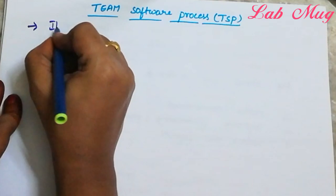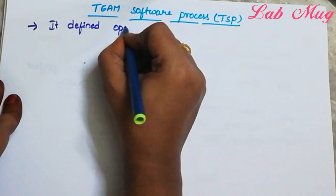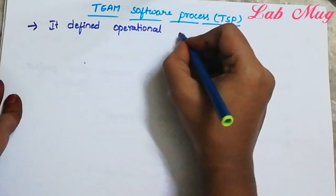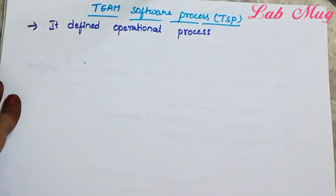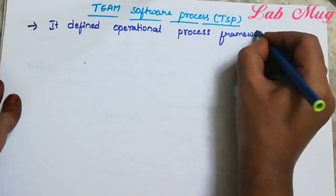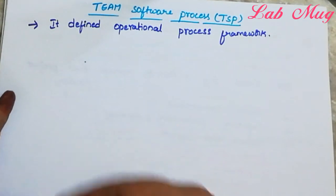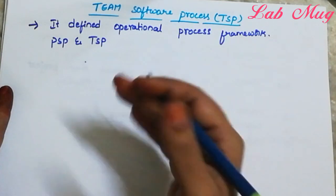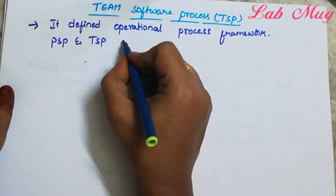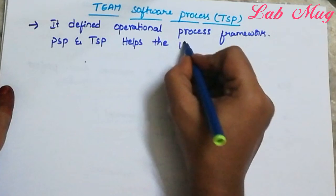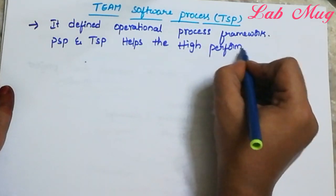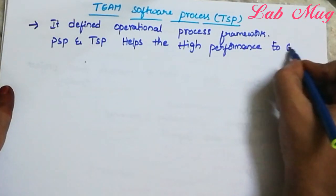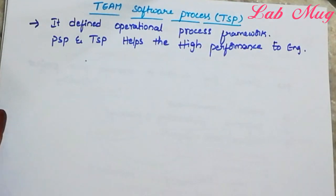It defines an operational process framework. The process framework activities are divided based on complete team operations for development. The main important points are PSP and TSP — used individually or in combination. PSP and TSP help to build high-performance engineers.